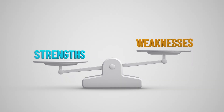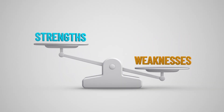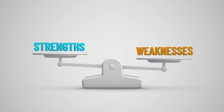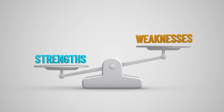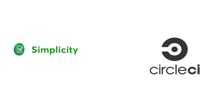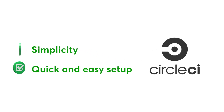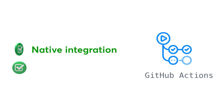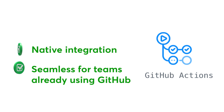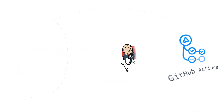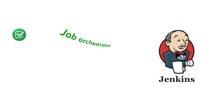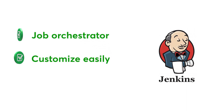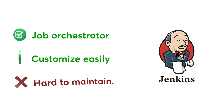As we conclude our comparison, it's essential to weigh the strengths and weaknesses of each tool. CircleCI excels in simplicity, providing a quick and easy setup. GitHub Actions offers native integration, making it seamless for teams already using GitHub. Jenkins, as a job orchestrator, is mostly customizable and easy to set up but hard to maintain.